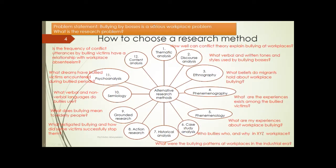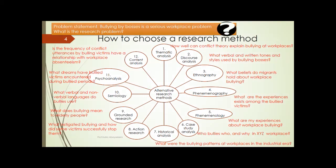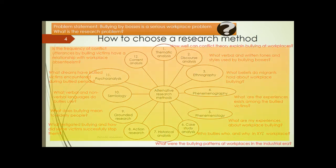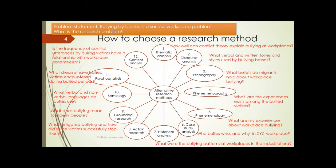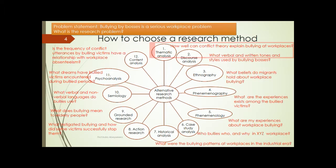Let's look at how we can apply these research methods. The first thing is, what is our problem statement, and then we can come to the next step. Based on that, what is the research problem? Depending on the research problem, that will determine our research method accordingly. Our problem statement here is that we problematize that bullying by bosses is a serious workplace problem. For example, if we want to inform a theory using thematic analysis, we can ask: how well can conflict theory explain bullying at workplaces?